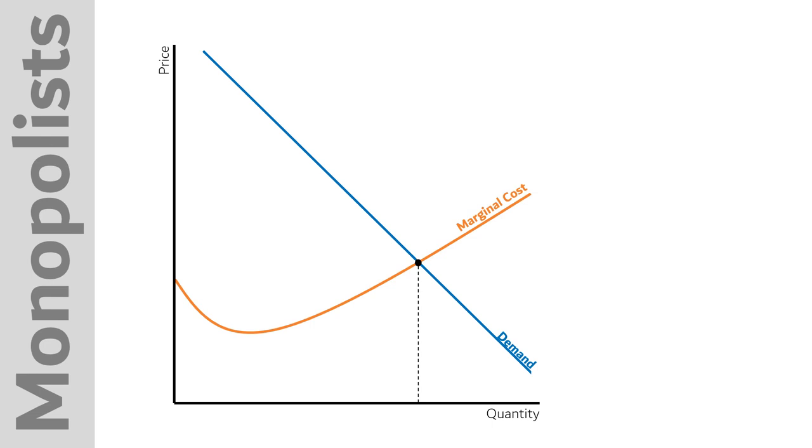But this is no longer where marginal cost crosses marginal revenue. If this is our demand curve, marginal revenue looks like this. Let's illuminate that with a numerical example.